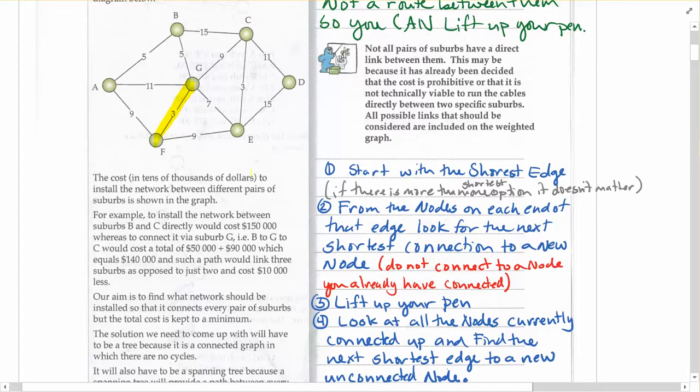And as a habit, some people get really confused on this. I'll just get them to doodle on the side to remind themselves that they've picked the pen up. So I've picked my pen up, and I'm now going to look. The two that I've connected onto this network so far, so you can imagine I've laid down fiber optic cable for $3,000 between F and G. I now want to see, going from either G or from F, so from the two nodes that are now connected, what's the next cheapest possible thing I can do?